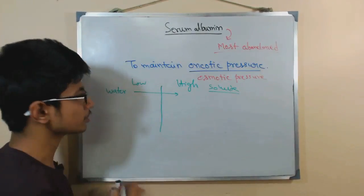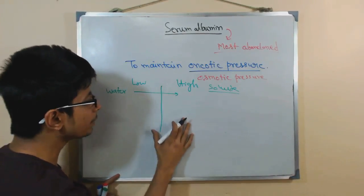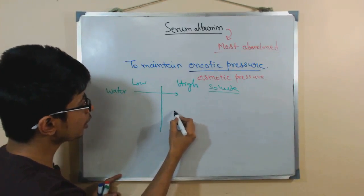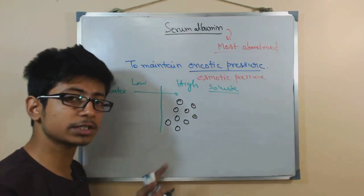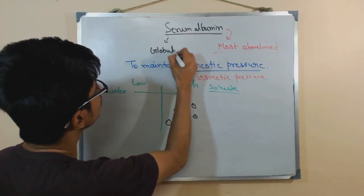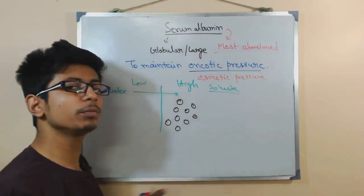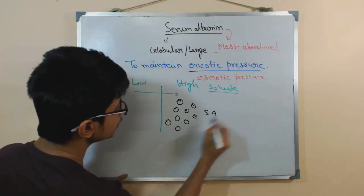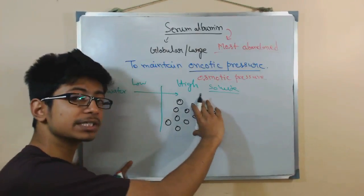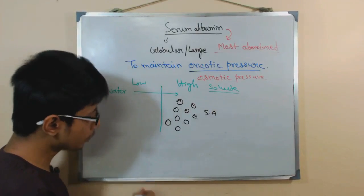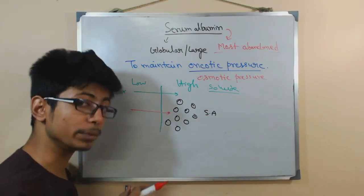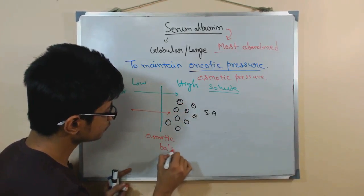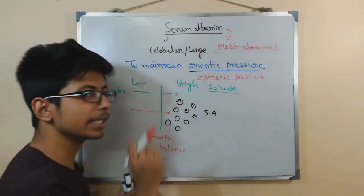When serum albumin is present in a region, a lot of albumin accumulates there. Serum albumin is a large globular protein — most soluble proteins are globular. Because albumin raises the solute concentration in that region, water flows from the surrounding area into that region to balance the concentration. That is the task of serum albumin: to maintain osmotic balance in our body.